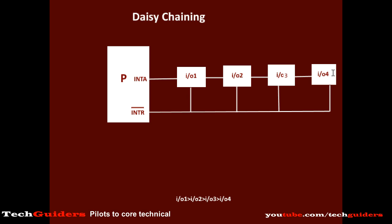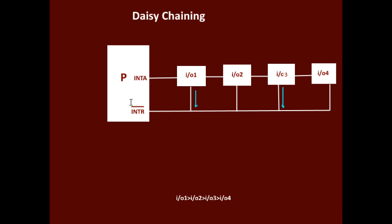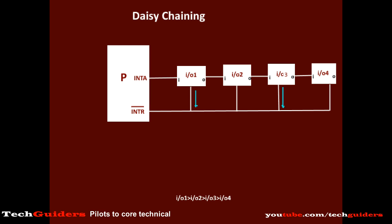So how is the priority scheme achieved here? Let I/O device 1 and device 3 have raised their interrupts. The request will be received by the processor, and if the processor wishes to service that request it will send an acknowledgement signal along the acknowledgement line. For every I/O device there will be an acknowledgement input and acknowledgement output. The processor will send a high acknowledgement signal, which will reach the first device in the chain — that is the highest priority device, I/O device 1. If this device had interrupted or wishes to get serviced, it can stop the propagation of this high acknowledgement signal to the next device by keeping its output low.